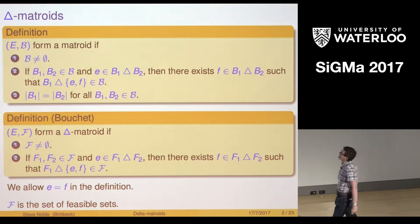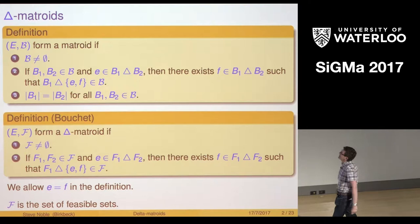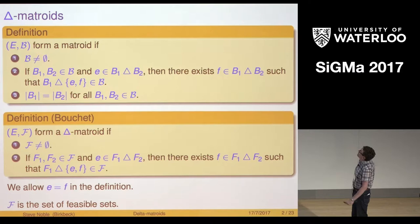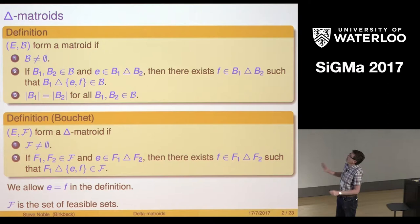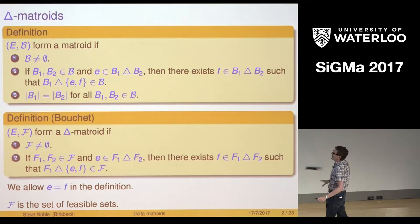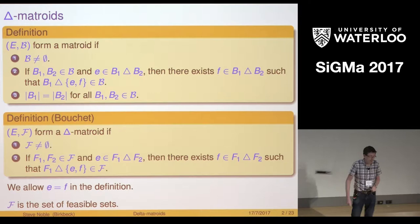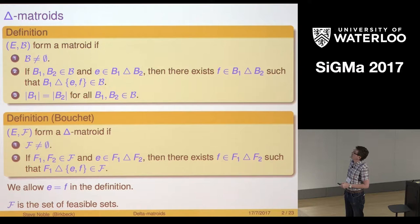Boucher introduced Delta Matroids in the 1980s and what they are is you take the first two parts of the definition from above and you throw away the fact that all the bases have to be the same size. If you want to keep an intuitive idea of what a Delta Matroid is, just think about a Matroid but we're allowing the bases to have different sizes. In that definition I'm allowed to take E equal to F and so that will mean bases or feasible sets as we call them could have sizes of different parity.